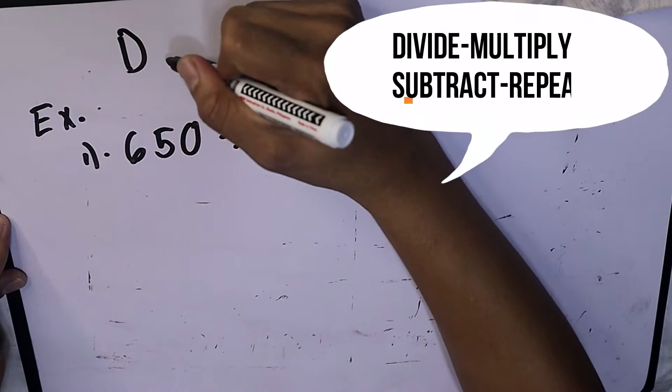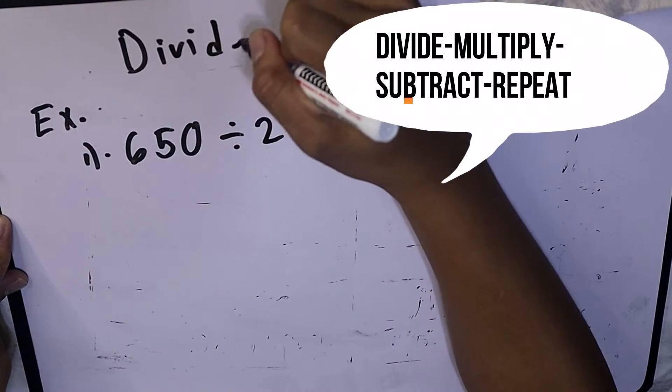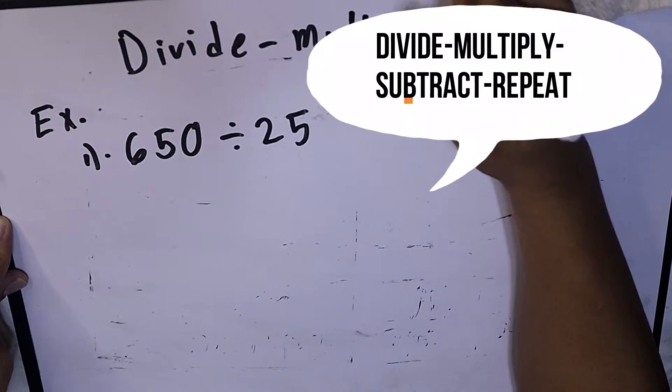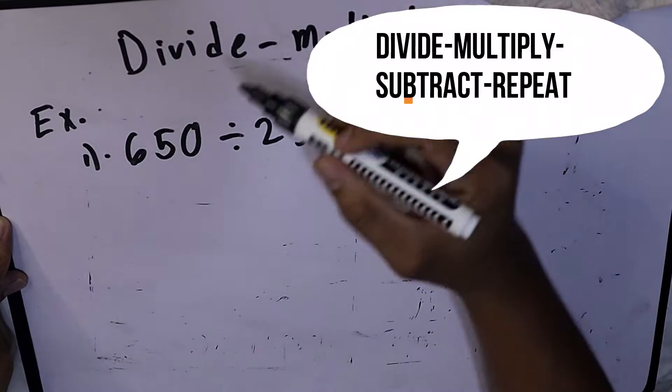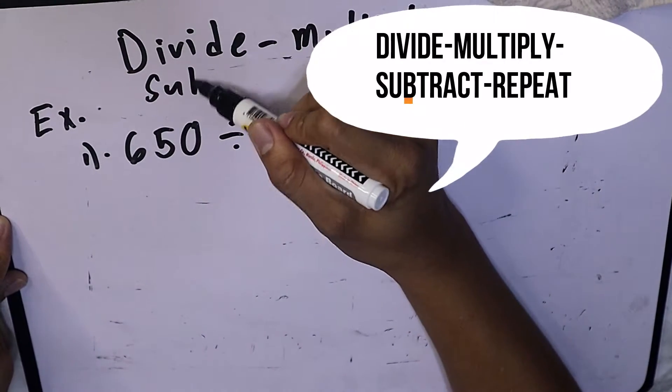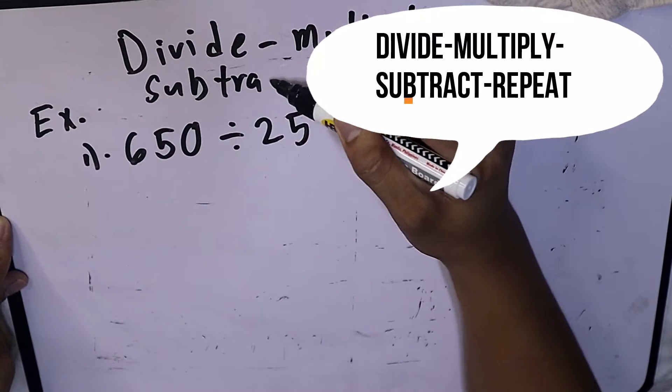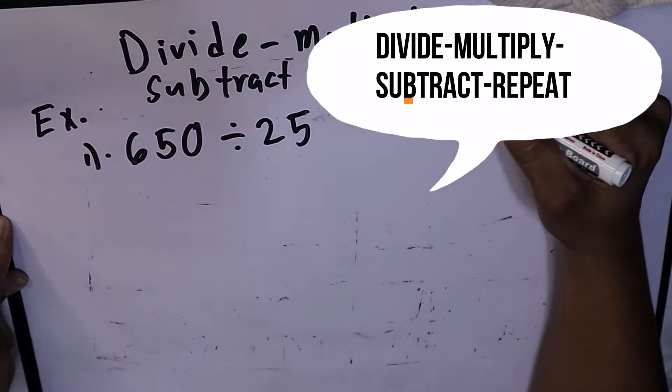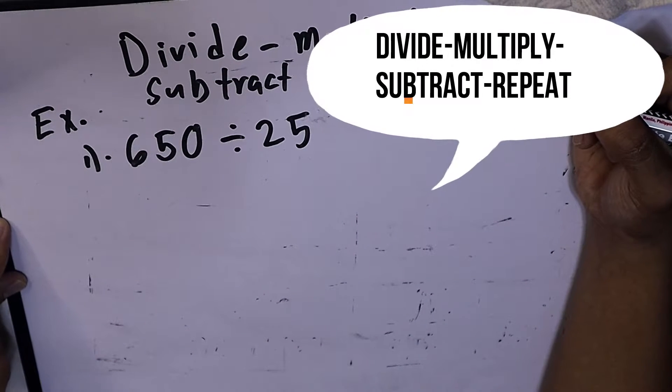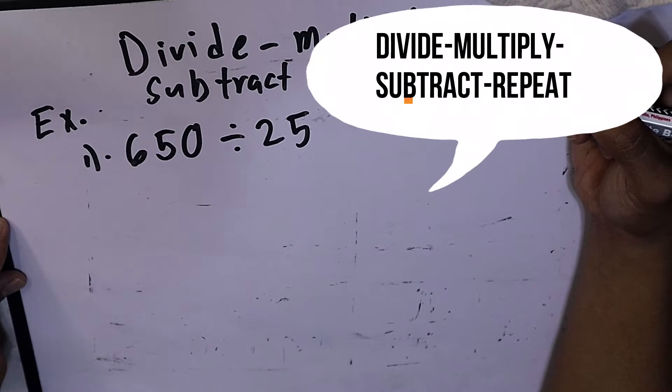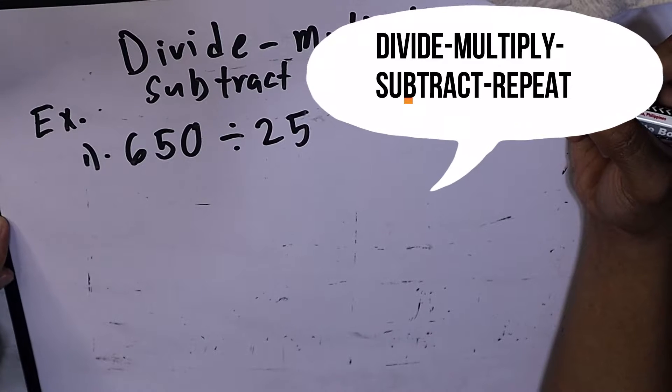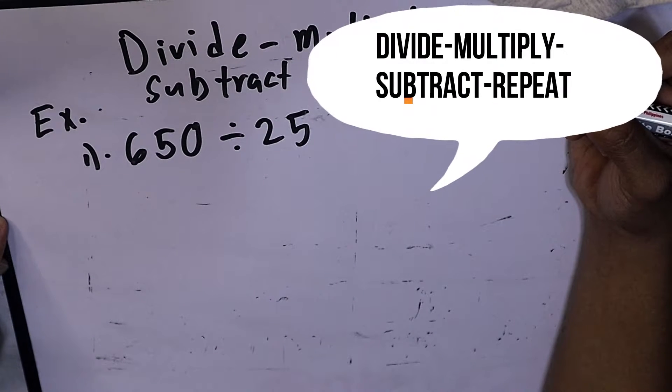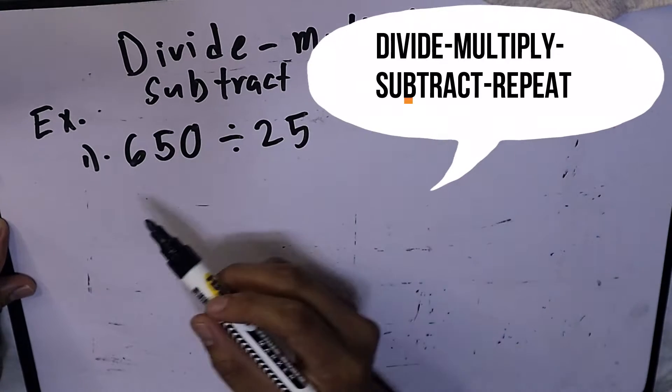In dividing two-digit numbers by three-digit numbers, there is a process that we're going to use: divide, multiply, subtract, and repeat. This process can also be used in dividing a one-digit number.